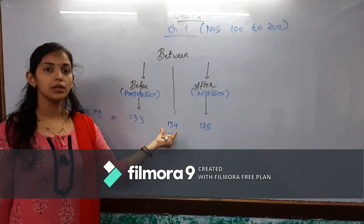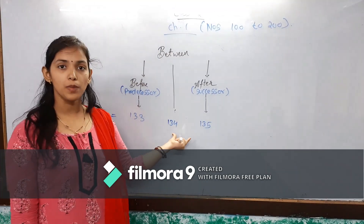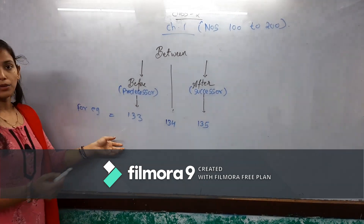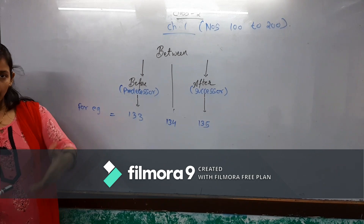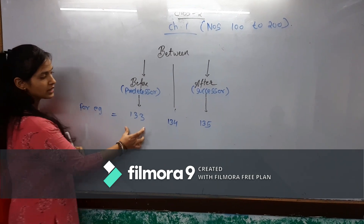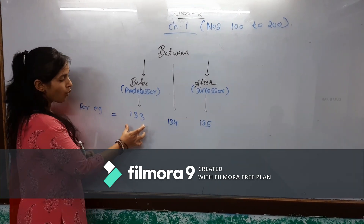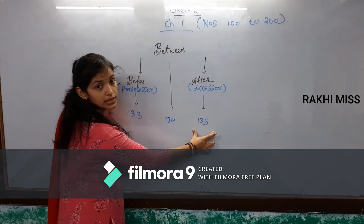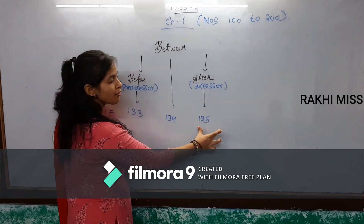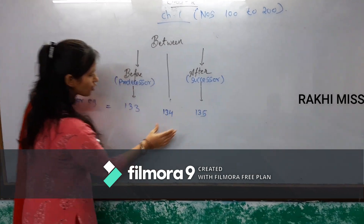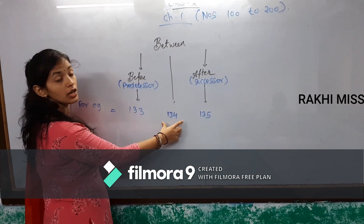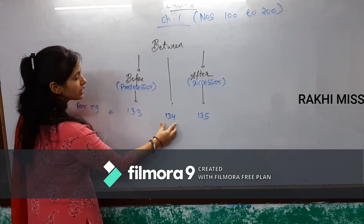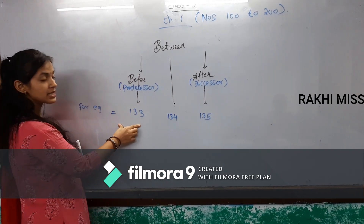Between means the numbers in between. For example, I have one set of numbers to understand. That is 133, 134 and 135. So 134 is in between. And 134 minus 1 — so 133 is your predecessor.